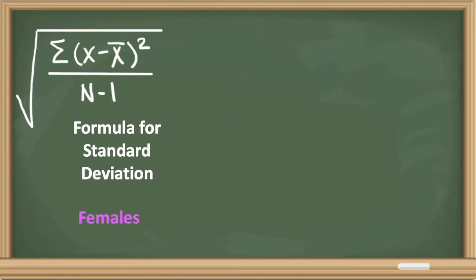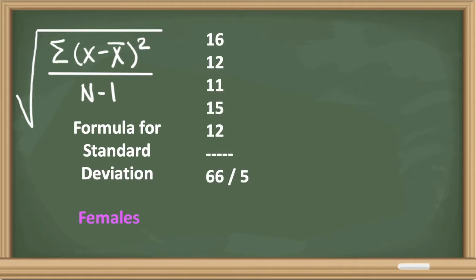Let's find the standard deviation for females. First, we find the mean. The females completed 16, 12, 11, 15, and 12 laps. If we total those up, we get 66 laps. We divide 66 by 5 because we have 5 females, giving us a mean of 13.2.